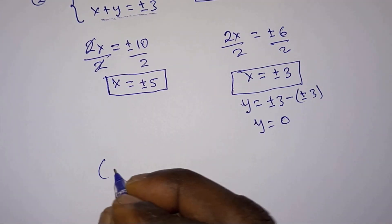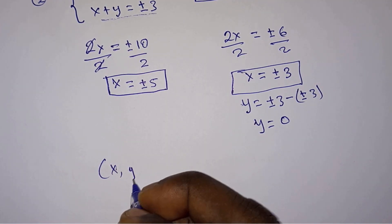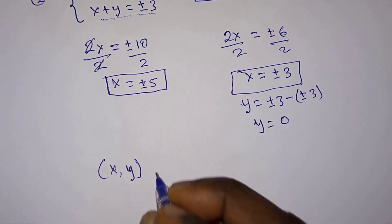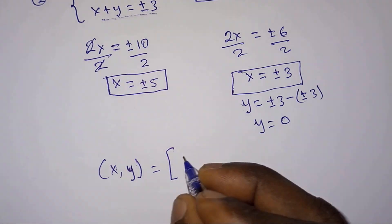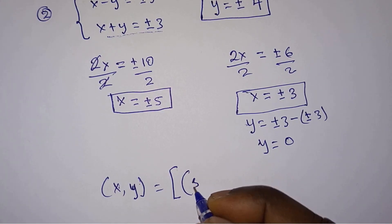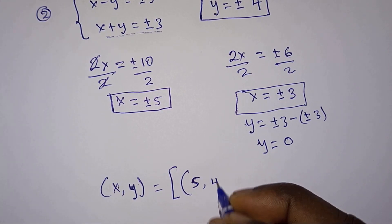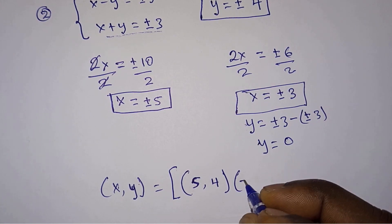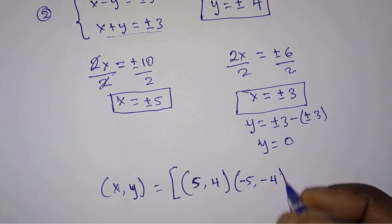So the values of x and y for the problem: when x is positive 5, y is 4; when x is negative 5, y is negative 4.